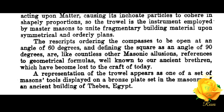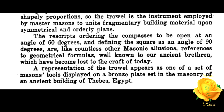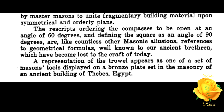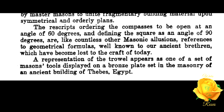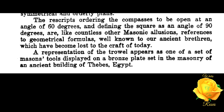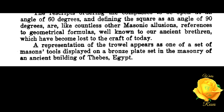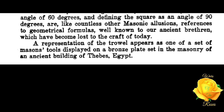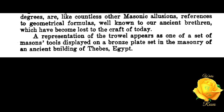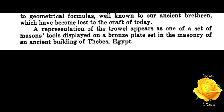The prescripts ordering the compass to be open at an angle of 60 degrees and defining the square as an angle of 90 degrees are, like countless other Masonic allusions, references to geometrical formulas well known to our ancient brethren, which have become lost to the craft of today.